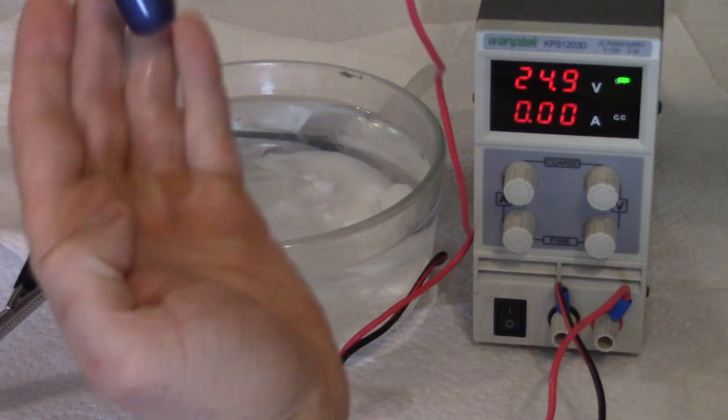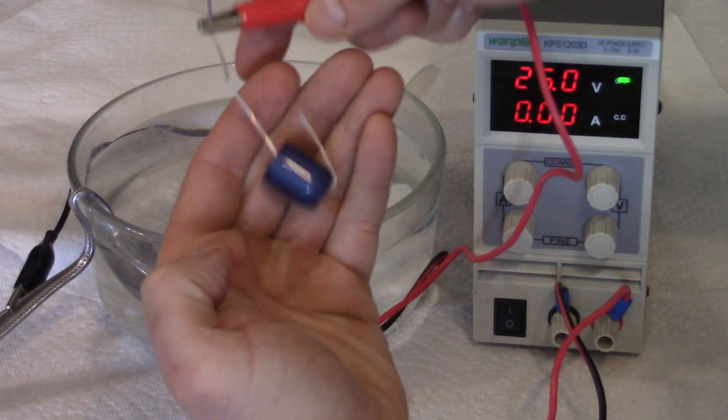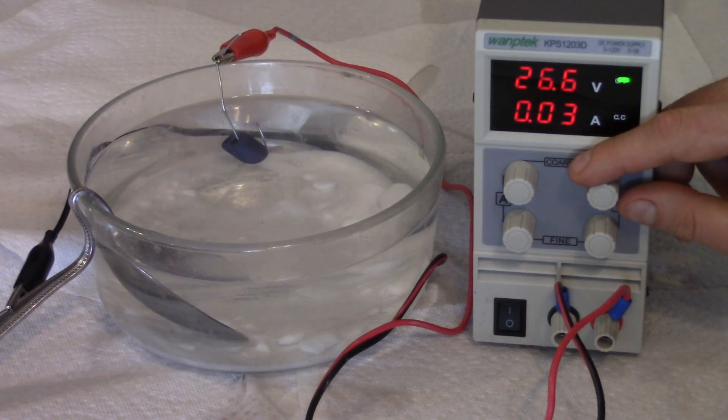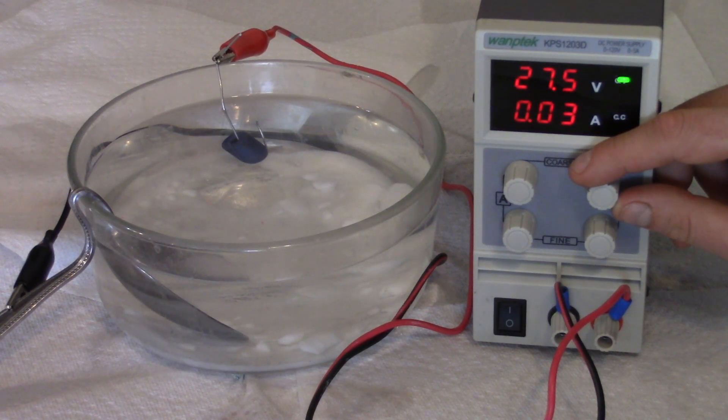At 23 it starts to get purpley blue and 25 most of the purple will pretty much come out. 25 is like a nice royal blue.